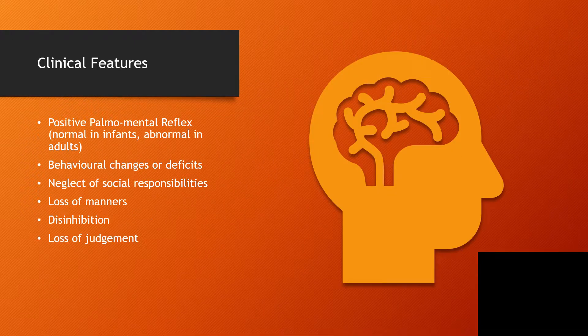The clinical features will involve a positive palmomental reflex. The palmomental reflex is when the palm is scratched or you make a straight mark on the palm and you watch for movement of the chin. That is the palmomental reflex — it is normal in infants but abnormal in others. So if you are suspecting frontotemporal dementia, you can scratch the palm and look at the chin at the same time. If there is movement of the chin, that is a positive palmomental reflex, and it is not expected to be found in adults.